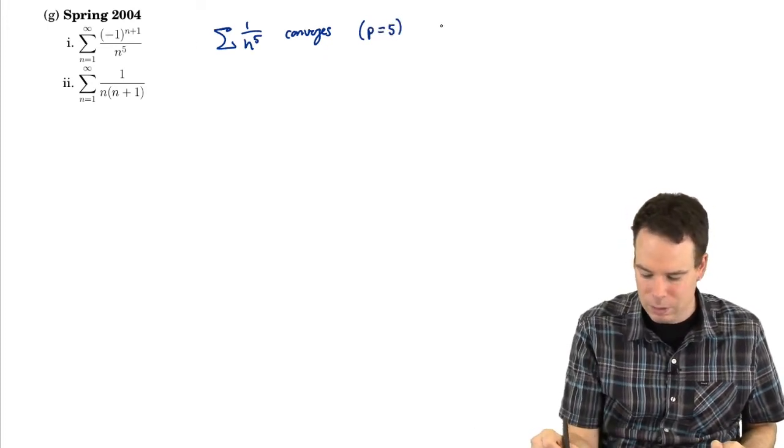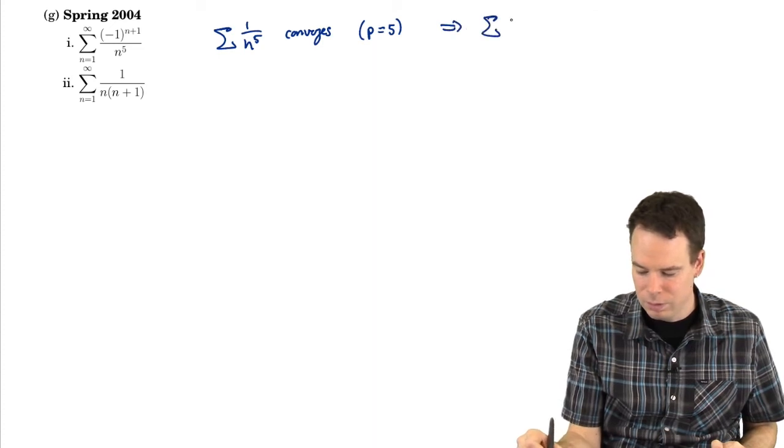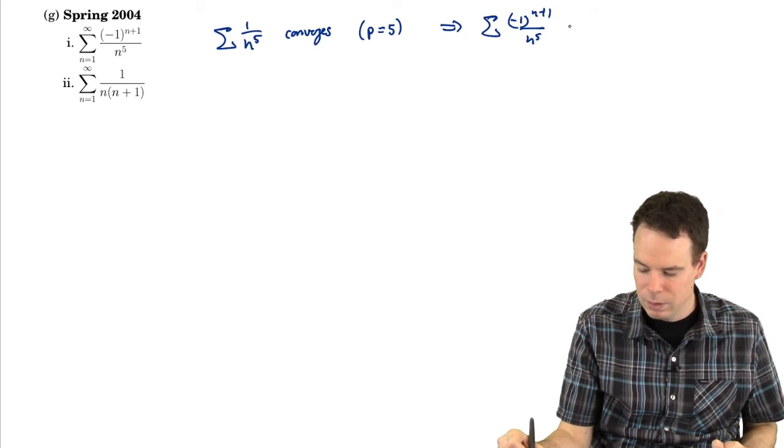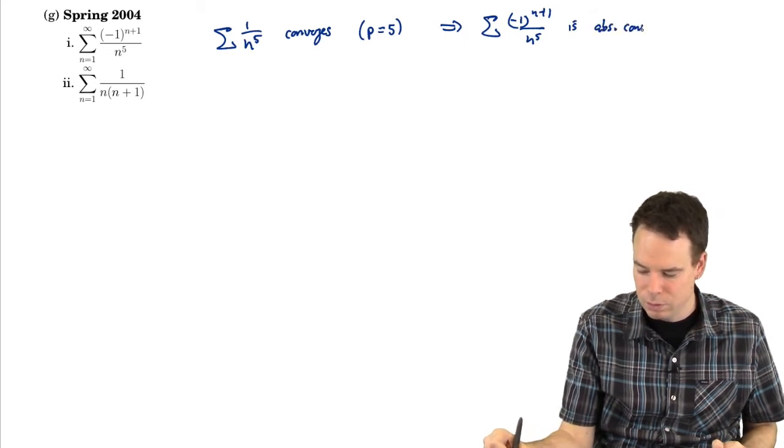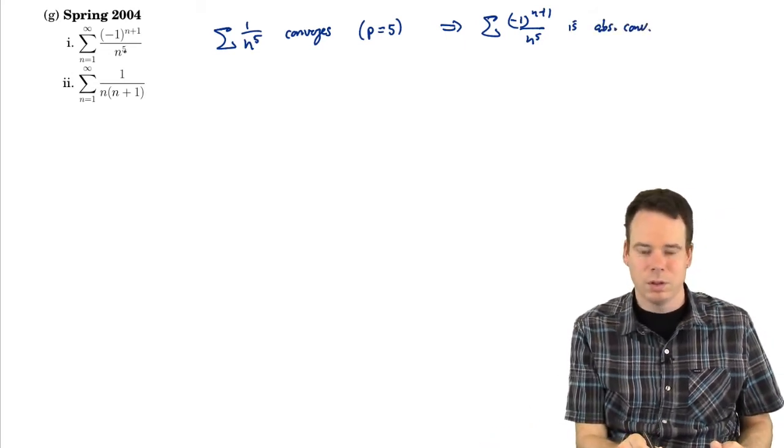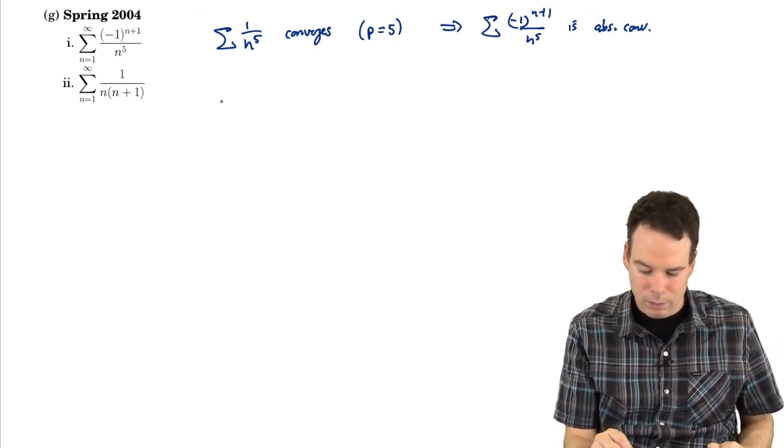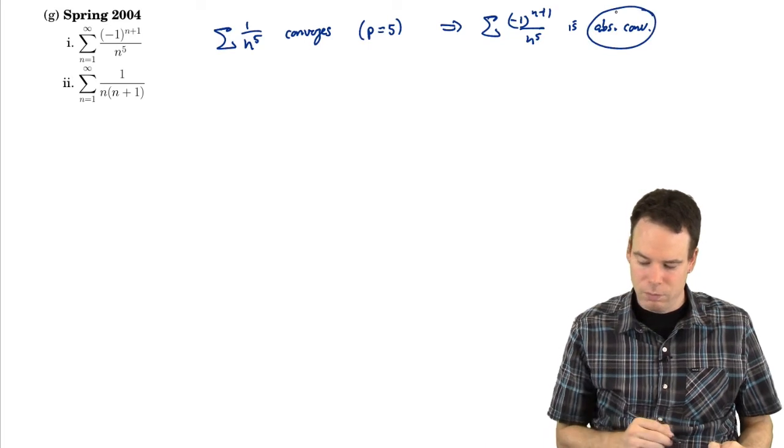So what that means is that our original series is absolutely convergent. Even stronger, not only does it converge, it converges regardless of whether there's negative signs there or not. So it's absolutely convergent.